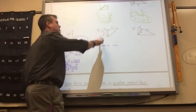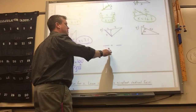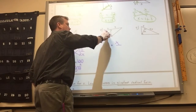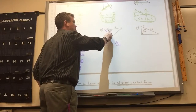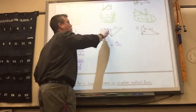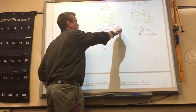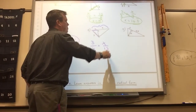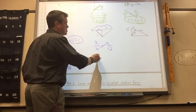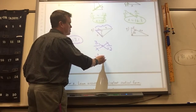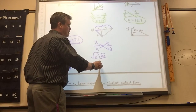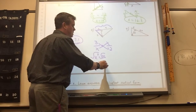Number 8 — the leg is the geometric mean. When it's one of these legs, you take the piece hooked to it and then add those together — it's 12. So x times x, x squared equals 3 times 12, which is 36. When you square root it, it's just 6.